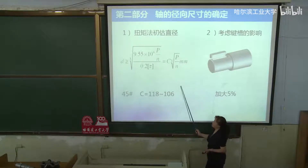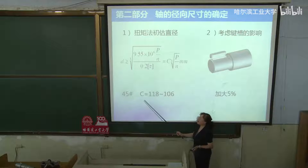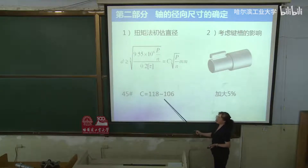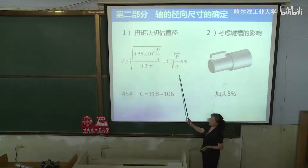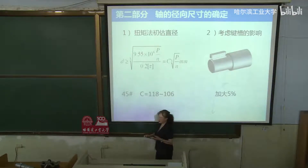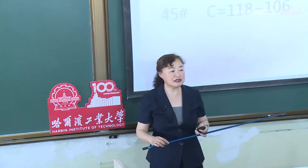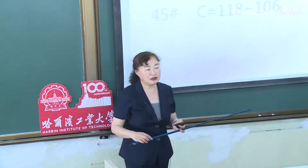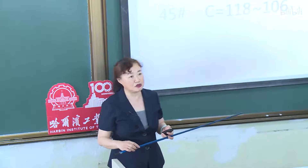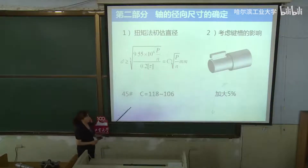首先看轴段一的直径确定。第一步，按扭矩法初估直径：D ≥ C·∛(P/N)，这是扭矩法初估直径的公式。对45号钢来说，C的取值是106到118。轴按载荷分为：心轴（只受弯矩）、转轴（既受弯又受扭）、传动轴（只受扭矩）。如果一个轴只受扭矩，则按此公式算出的就是精确值。